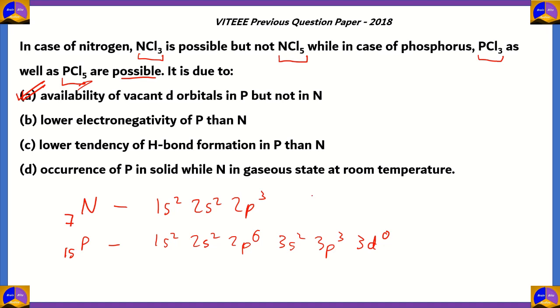NCl₅, because there are not enough electrons and also there is not enough space to fit in two more chlorine atoms. That's why option A, availability of vacant d orbitals in P but not in N, is the correct option.